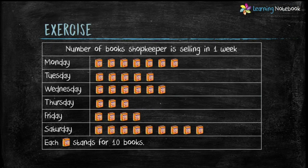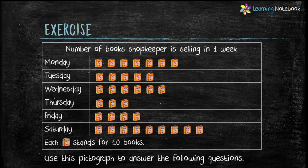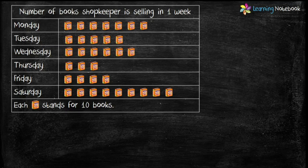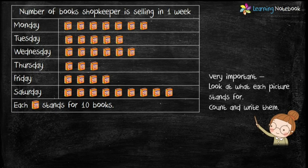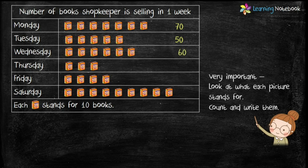Now let's do an exercise based on a given pictograph. This pictograph represents the number of books a shopkeeper sold in one week, and each picture stands for 10 books. It is very important to first look at what each picture stands for, then count for each row. On Monday there are 7 pictures, so books sold is 7 into 10 equals 70. On Tuesday it is 5 into 10 equals 50. On Wednesday it is 60, and so on.